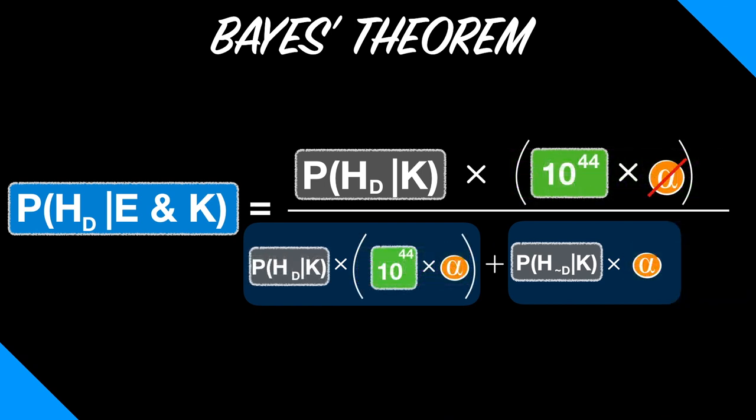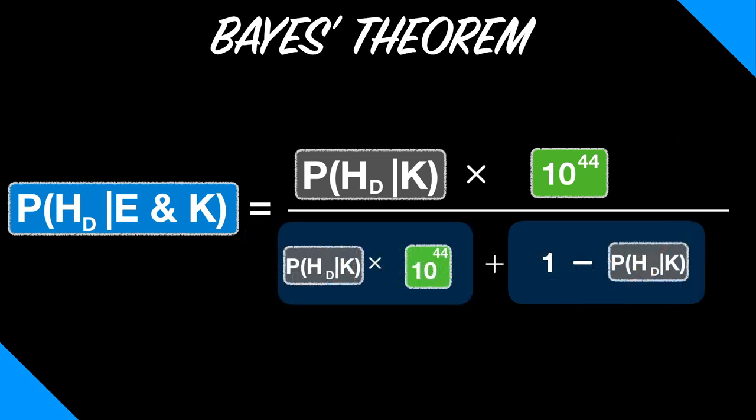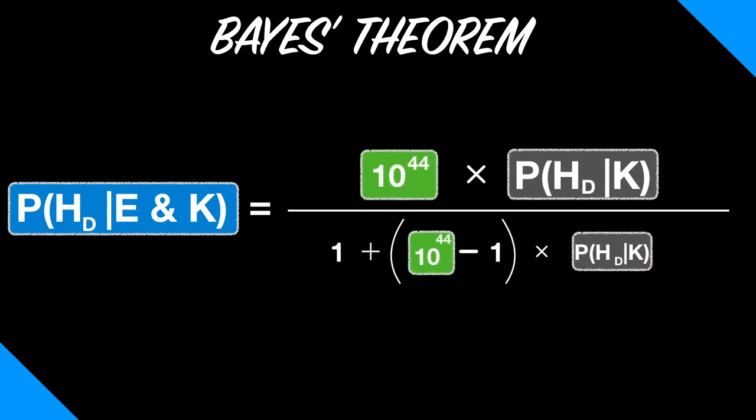The alphas cancel, and since H, D, and H not D are contradictory propositions, we can rewrite this term as 1 minus the probability of H, D given K. We can then simplify the denominator, leaving us with this equation. Phew. Okay, the most technical part is over.